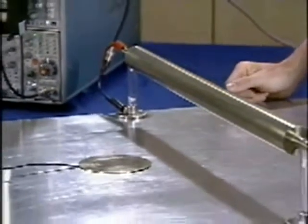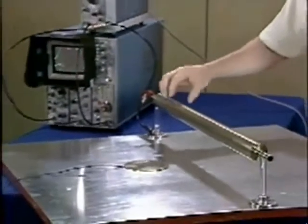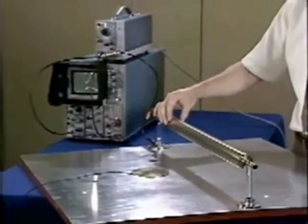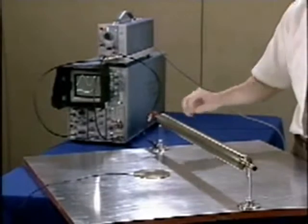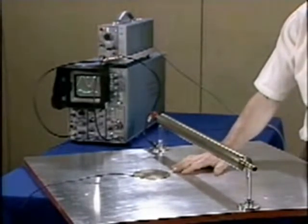The actual charges are induced on its surface in just such a way that every point has the same potential as the source. Similarly, charges are induced on the surface of the ground plane in just such a way as to make it have zero potential.